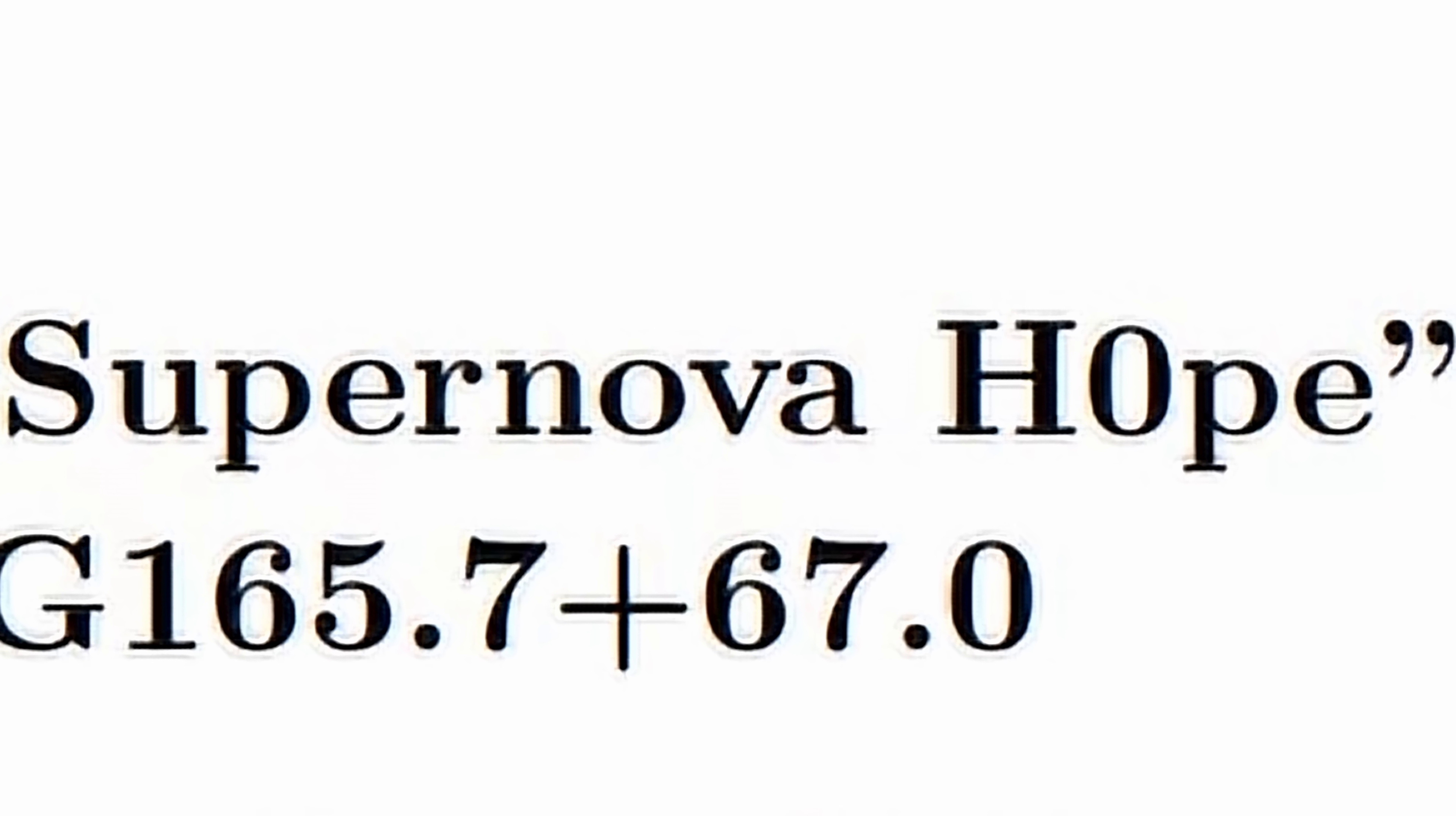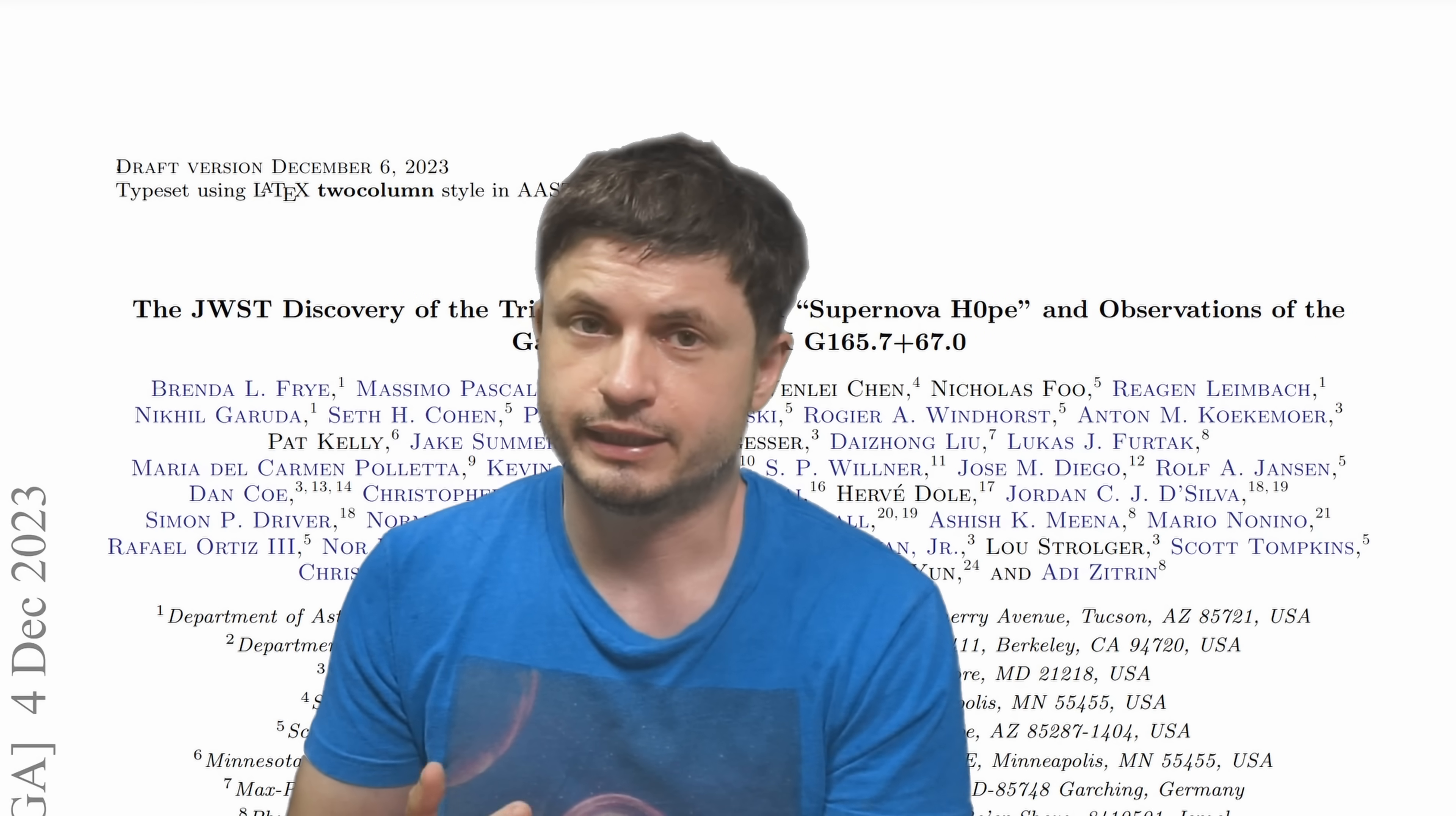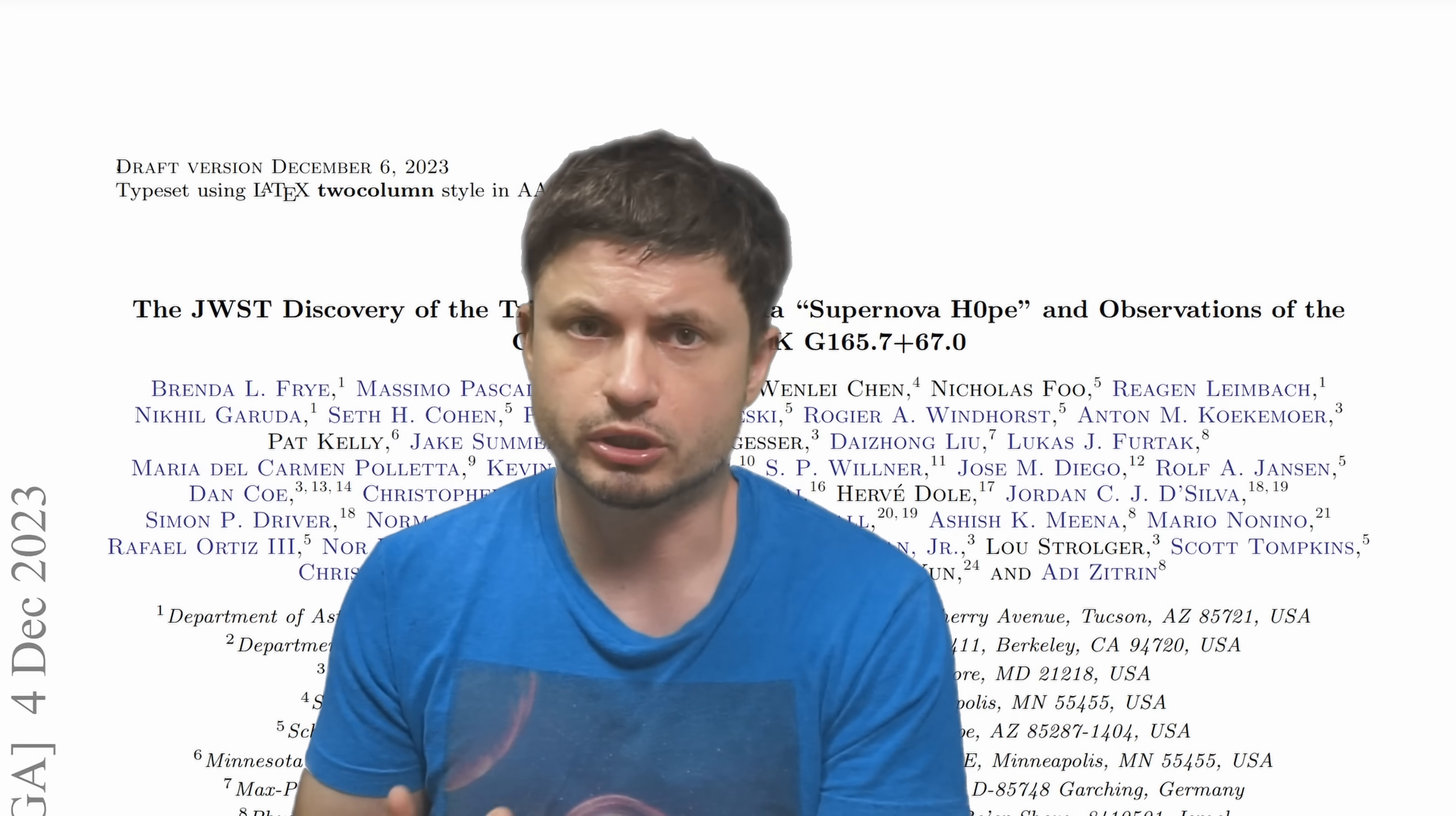Interestingly, at least one of these supernovae has now been nicknamed Supernova Hope, although technically it's H0 which stands for Hubble constant. And the reason the scientists are referring to this as hope is because these studies can finally help us understand the Hubble constant scientifically and possibly solve the mystery of the so-called Hubble tension. You can learn about this in one of the videos in the description.